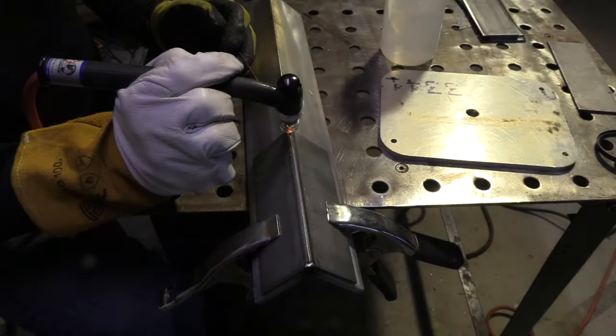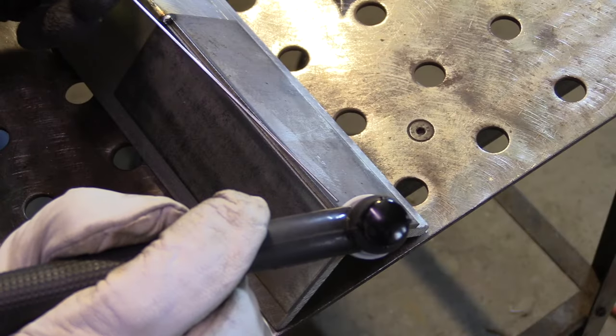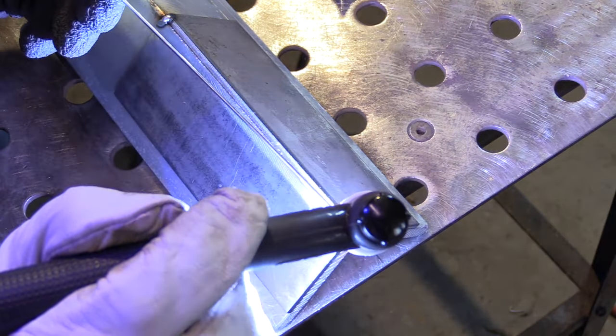First up is the outside corner joint on 11 gauge steel. The basics to getting a good weld are clean metal, good shield gas, clean filler metal, holding a tight arc, and good technique.